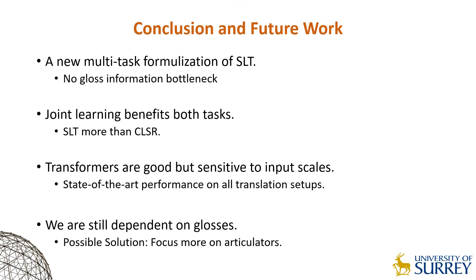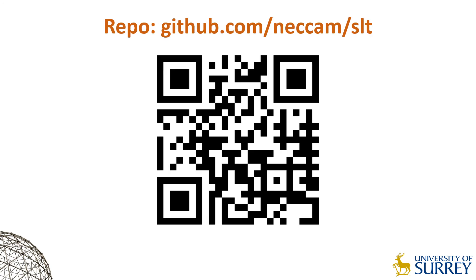In conclusion, Sign Language Transformers introduce a new way of realizing SLT. Overcoming the two-step approach, our multitask framework achieves state-of-the-art performance across all baselines. We also show that joint learning benefits both recognition and translation. One interesting observation is the transformer sensitivity to input scale. Although we have reduced the need for detailed gloss alignments, gloss annotation is still required, and this is a limiting factor for realizing large-scale SLT. To address this, we are planning to focus on sign articulators and other building blocks of the sign, such as subunits. Thank you for listening. Our source code, models, and qualitative examples are available on our GitHub page.